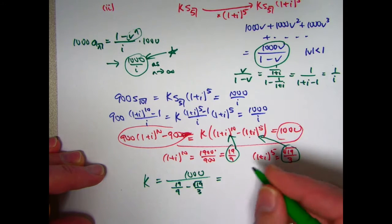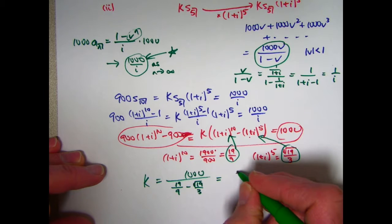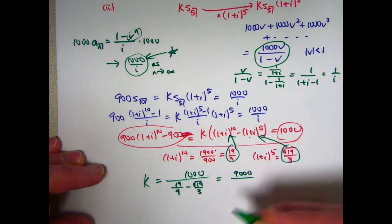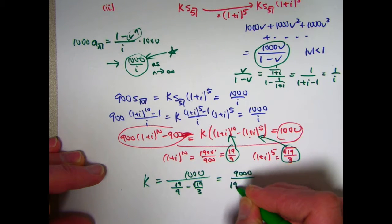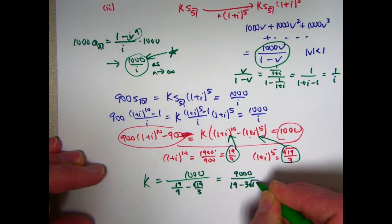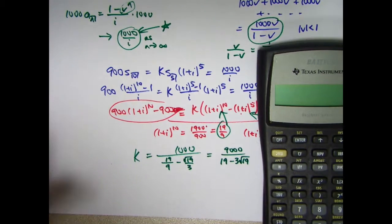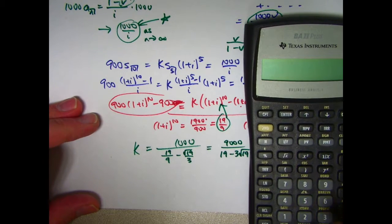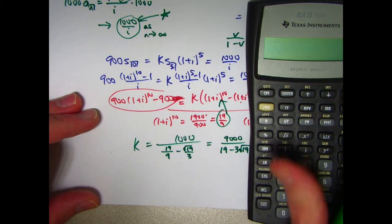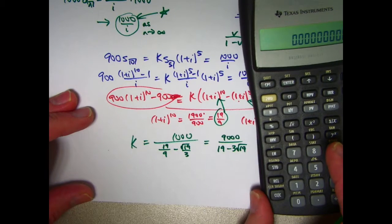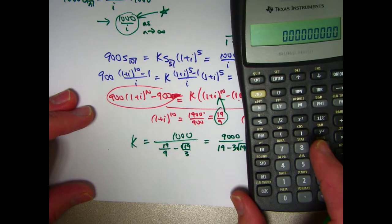Well, you can multiply the top and the bottom by 9. If you do so, you'll get 9,000 over 19 minus 3 root 19. Okay. I could have gotten approximations to these things earlier, but let's go ahead. This should be the answer.